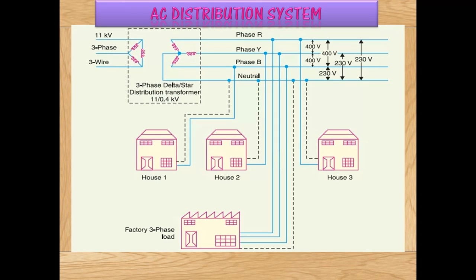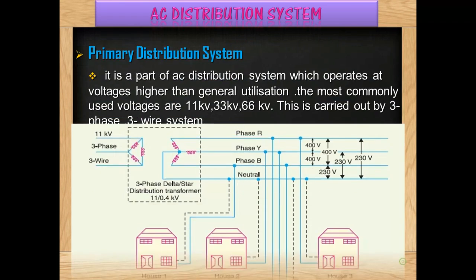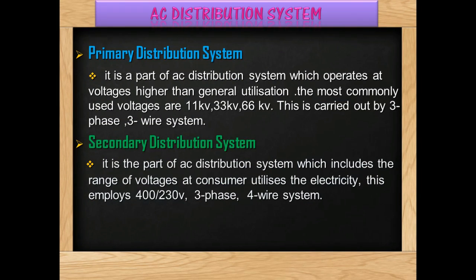Houses get 220 V, and the factory gets 3-phase supply. Now let us go to the DC distribution system.